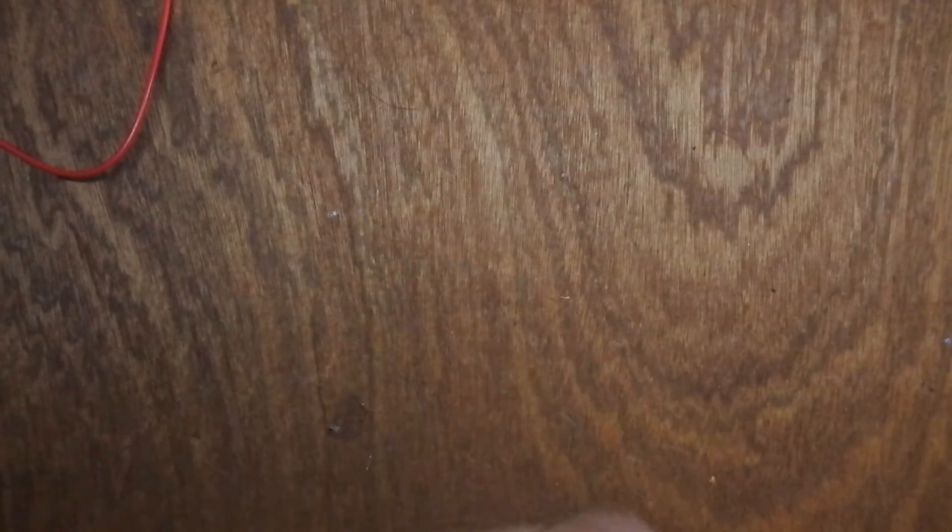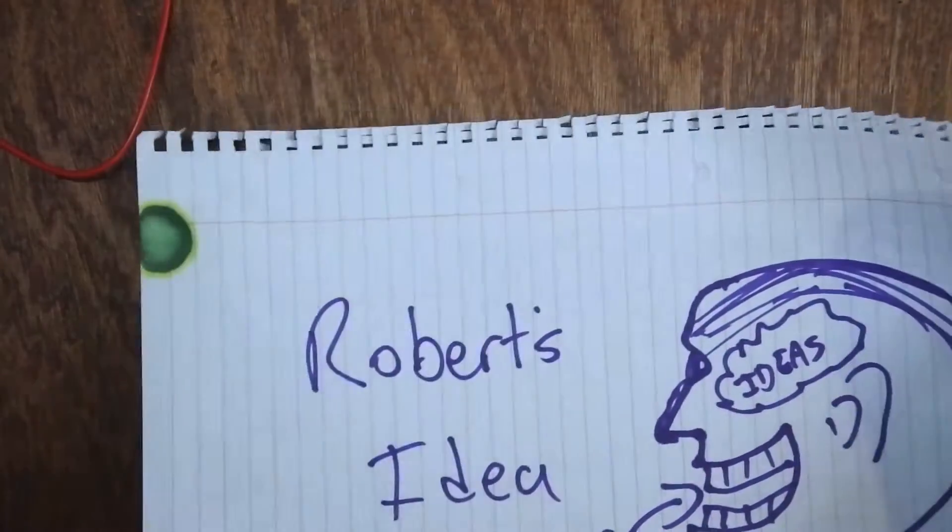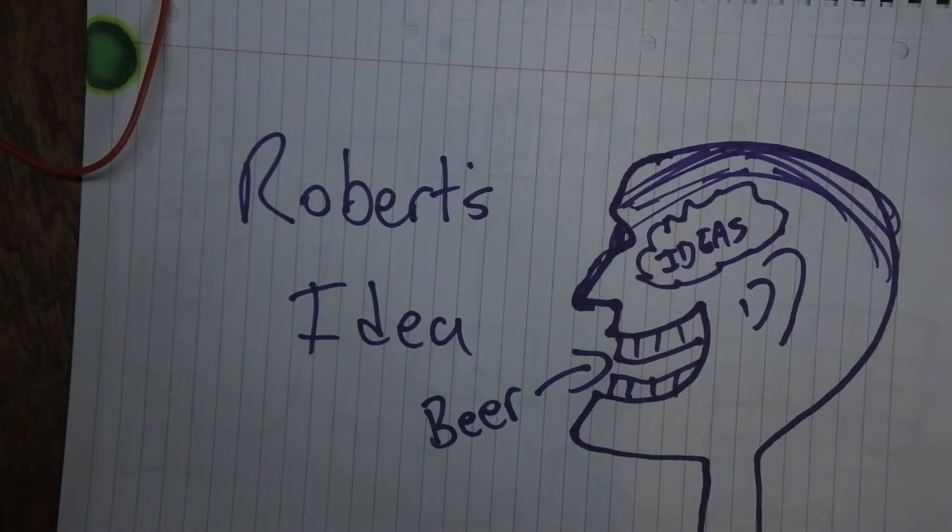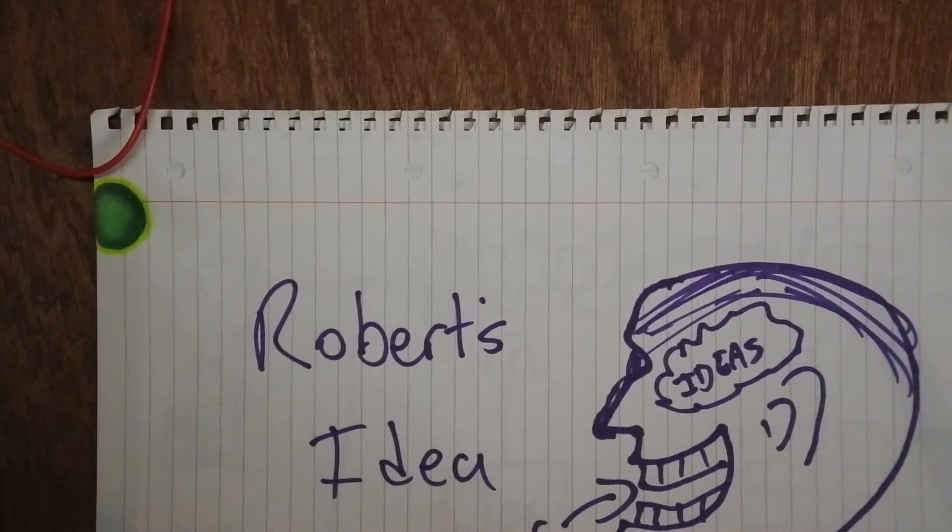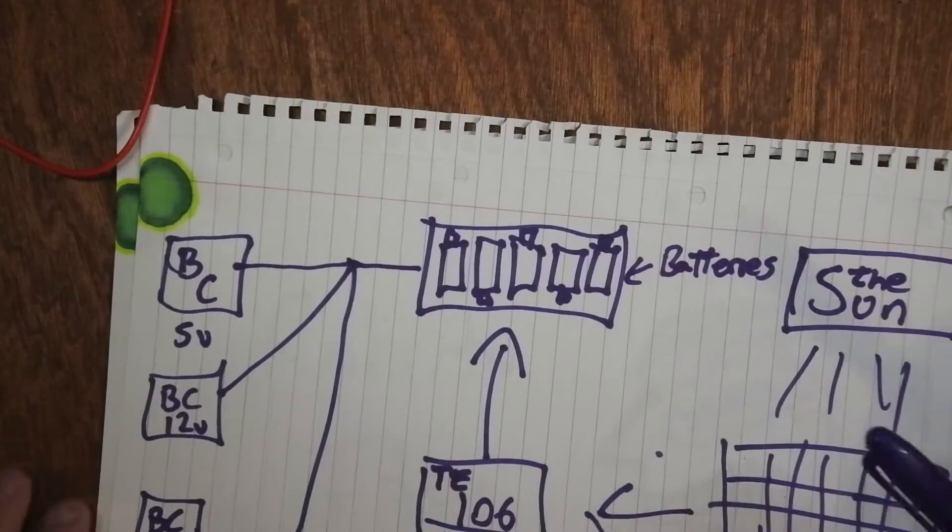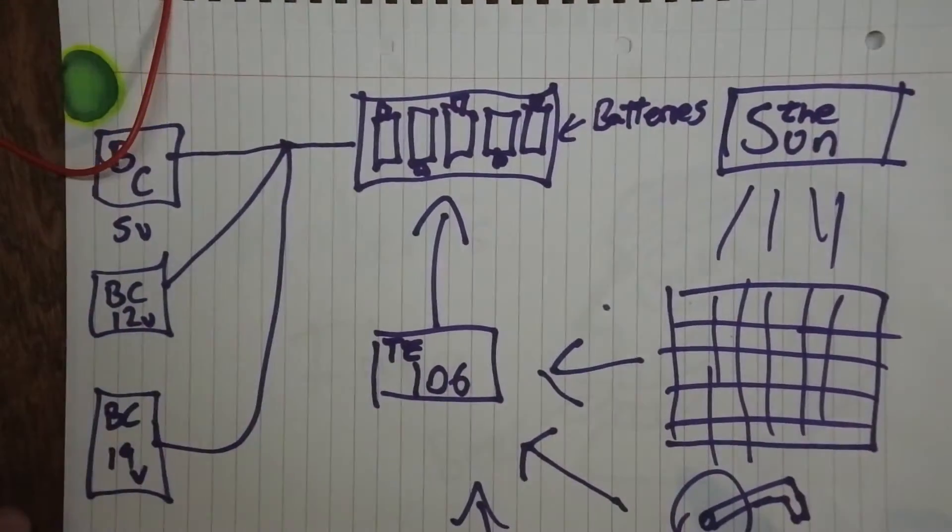And I'll show you my idea. Pardon me, I just dropped my pen. So what we have here is Robert's idea. Here it is. So this is a very simplistic block diagram of my idea.